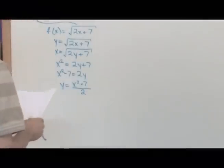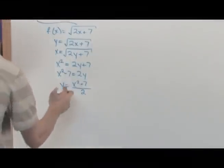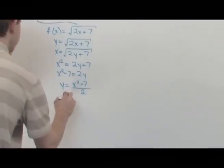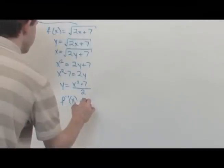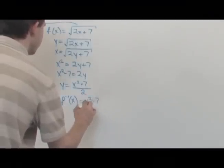That is basically the answer. And then the very final thing you do is you replace this y with f inverse, which is the inverse, is equal to x squared minus 7 over 2.